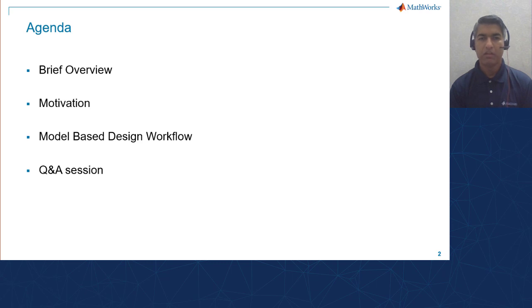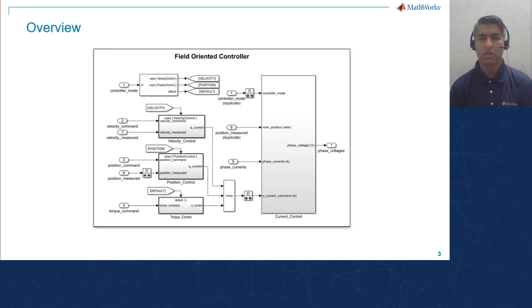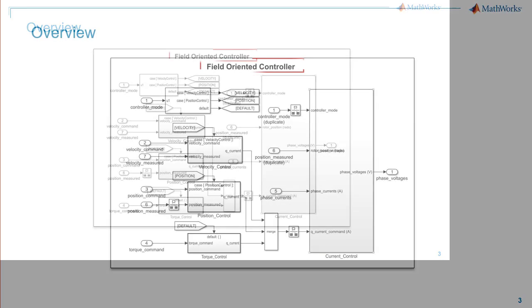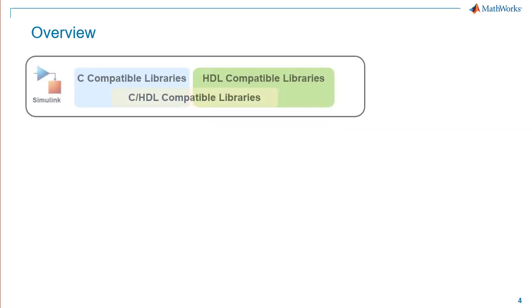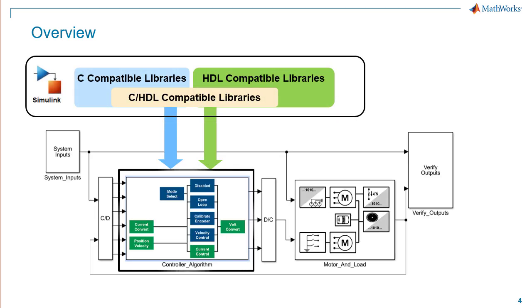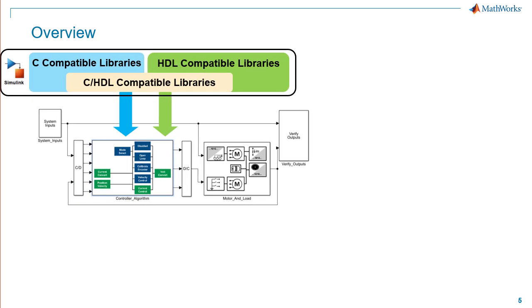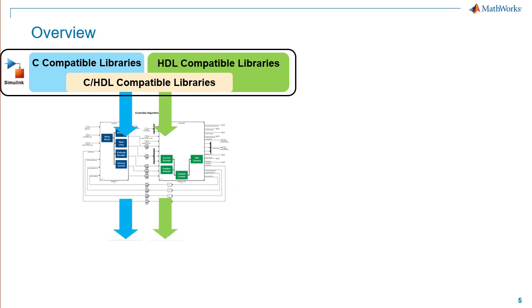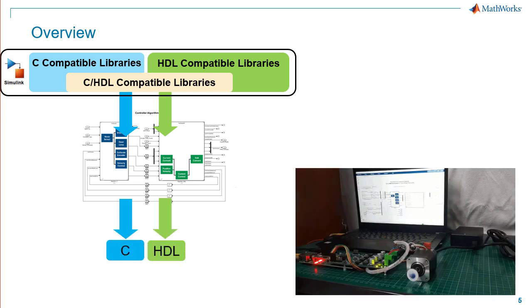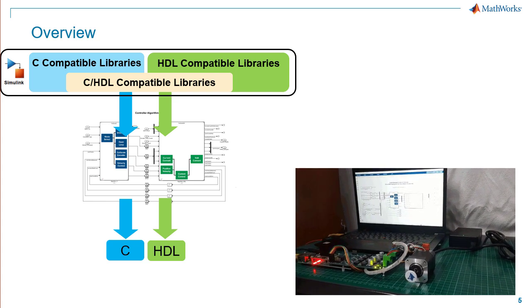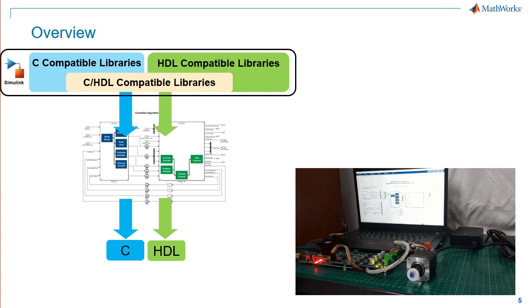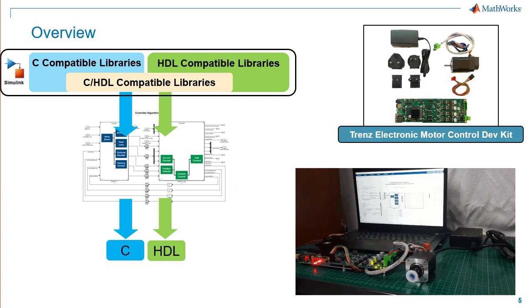We will end today's talk with a Q&A session. I will use a field oriented control algorithm, model it in Simulink using C and HDL compatible libraries, partition the controller algorithm for software and hardware implementations, generate C code and HDL code, deploy the bit stream to the hardware logic, and run the executable model on the ARM processor to operate the motor. I will be using the Xilinx Zynq Ultra Scale Plus SOC platform, which is part of the Trenz Electronic motor control development kit.